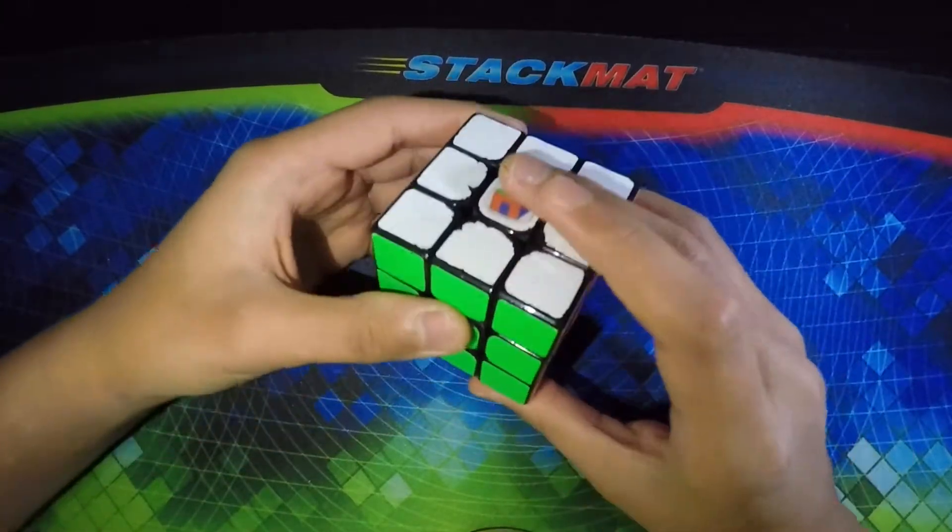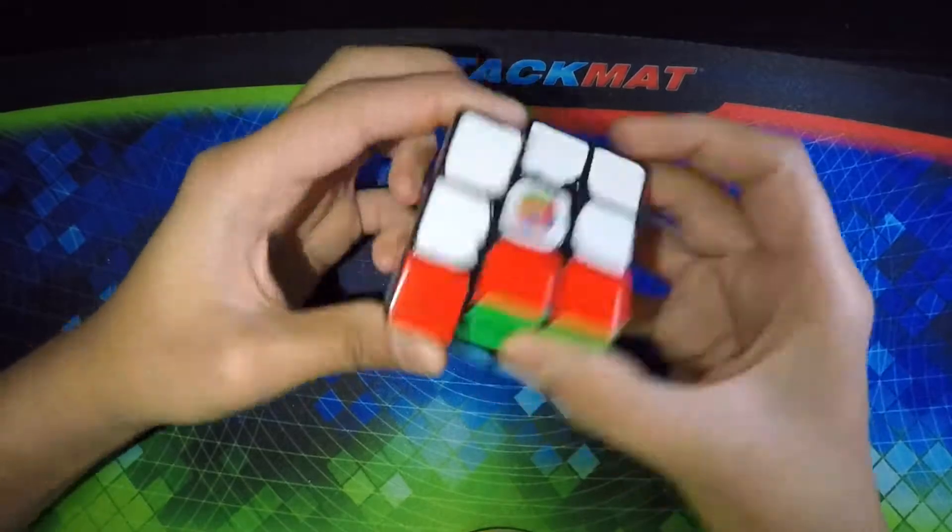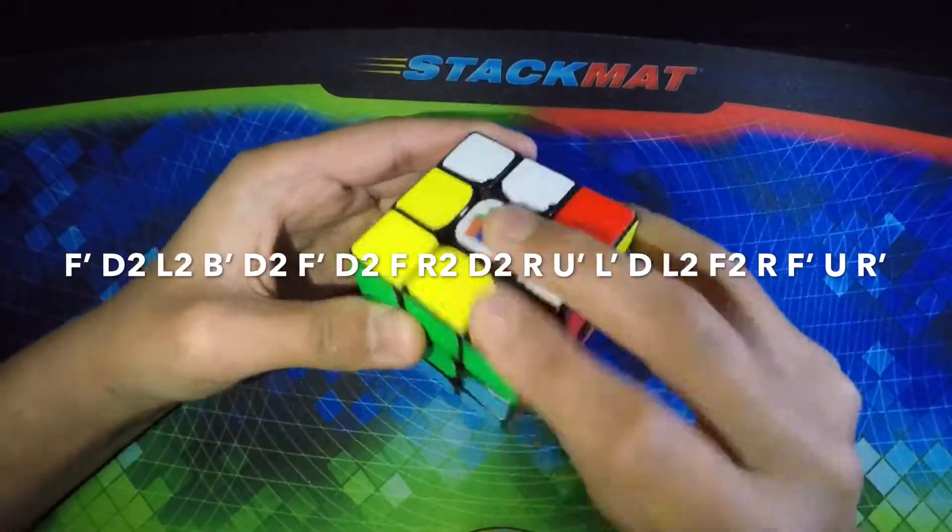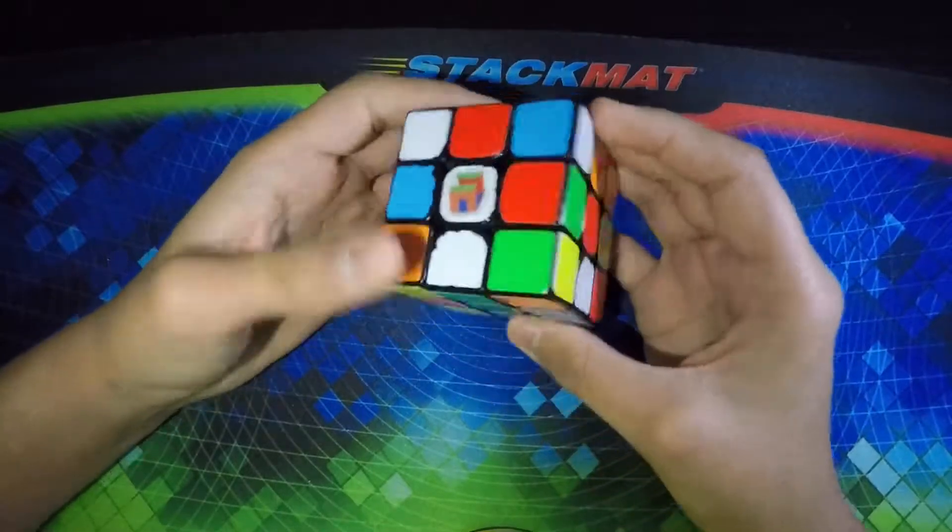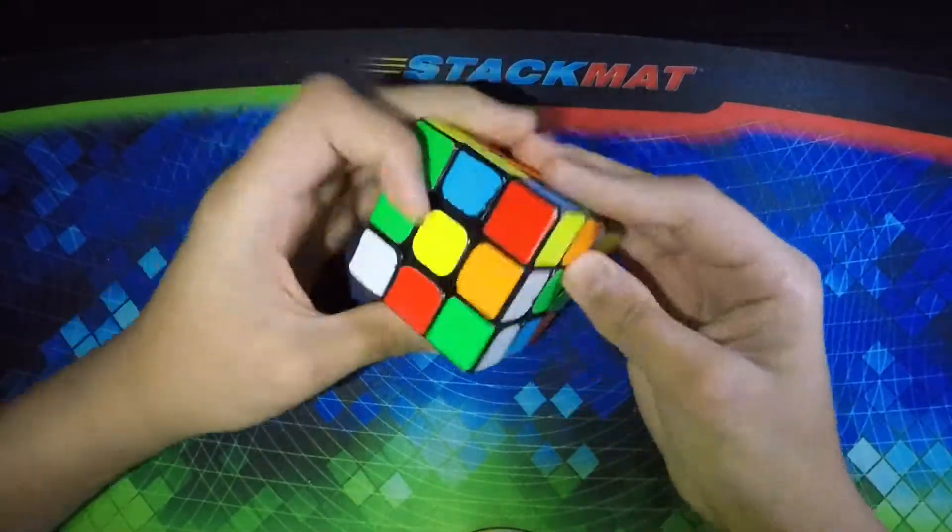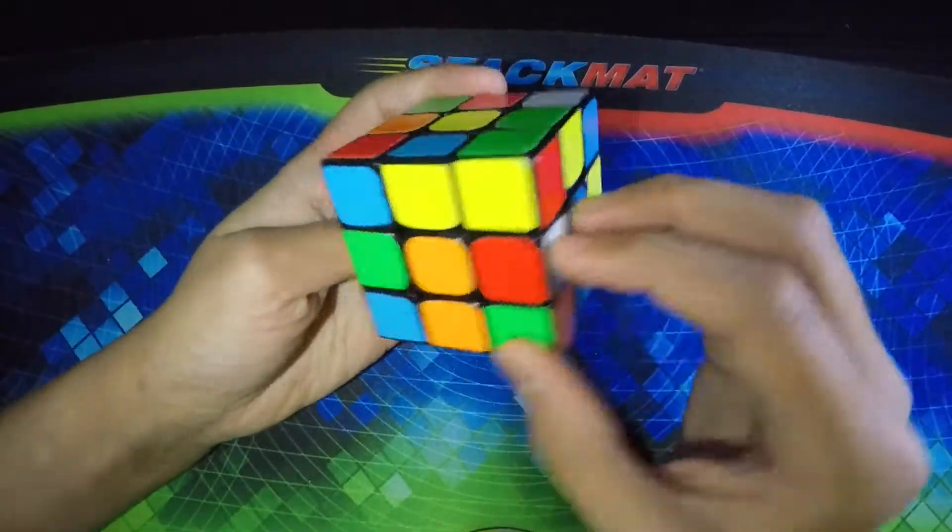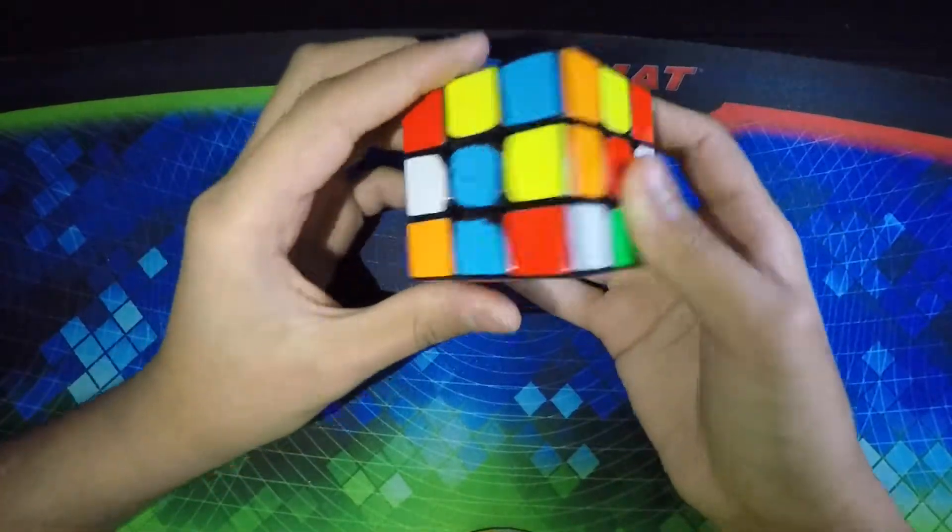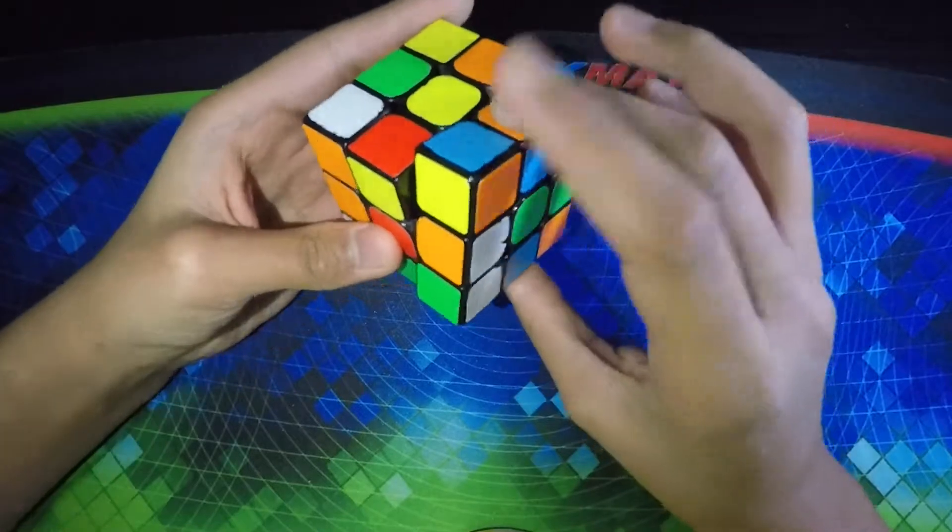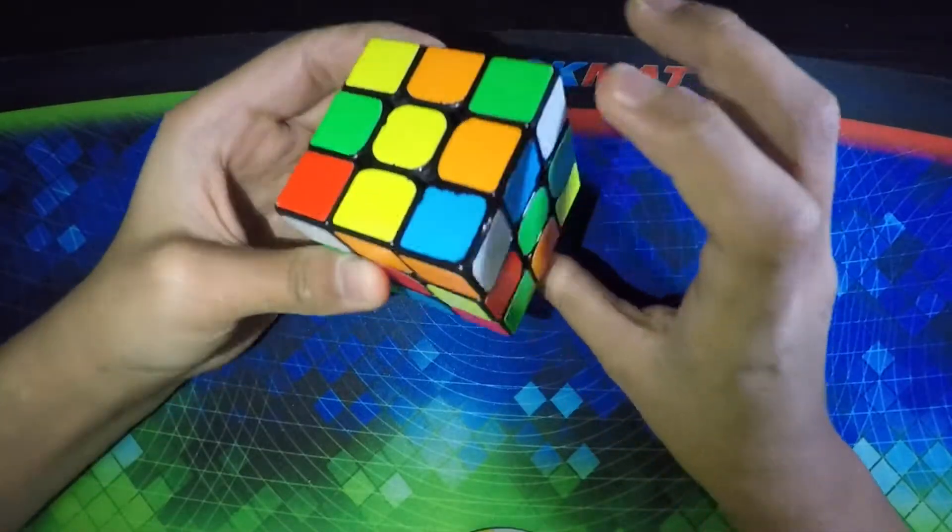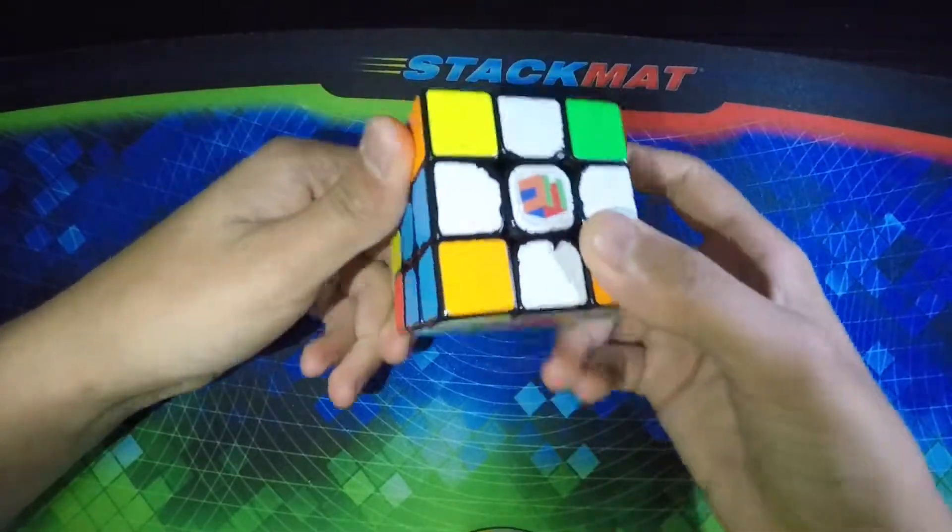So I think we'll go over this all one more time. Scramble's on the screen again. Just to make sure we know everything. Edges are here, here and here. I took the red edge down, put the blue edge down, and then put the orange one down. A D2 to match them all up, and then the cross is solved.